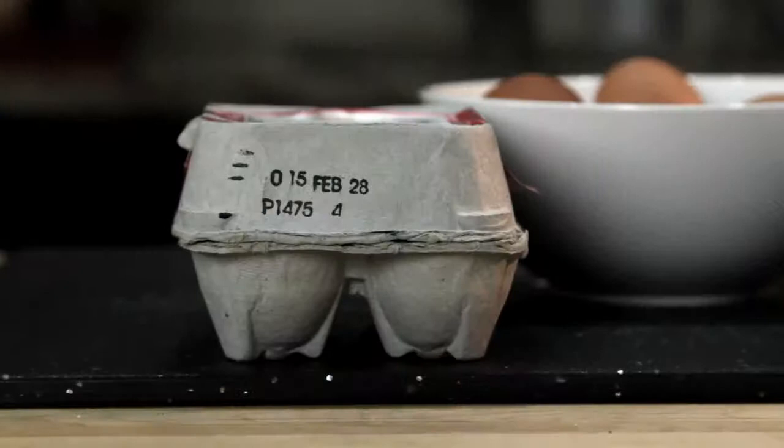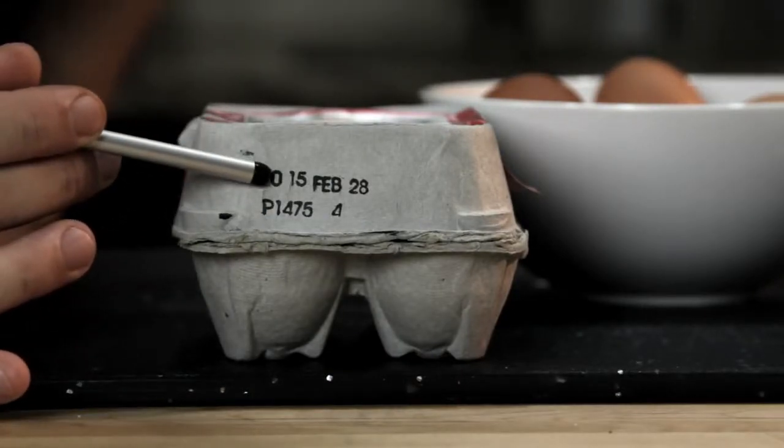There are two ways to tell how fresh an egg is. The first is to check something called the Julian date. As long as it's packed in the US, every carton of eggs has a number between 000 and 365 on it. And that number corresponds to the day on which the egg was cleaned and packed.